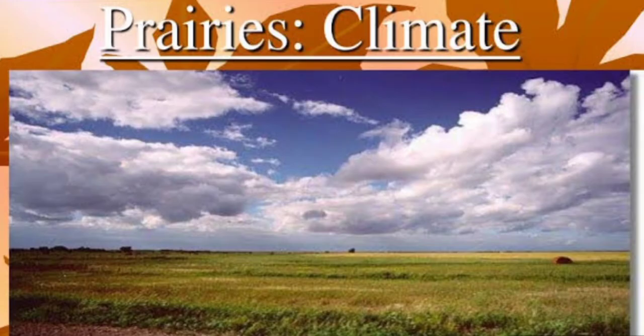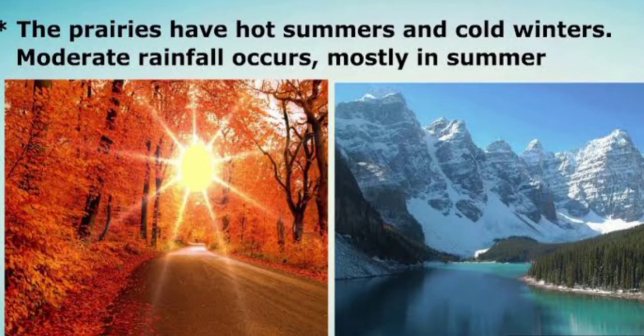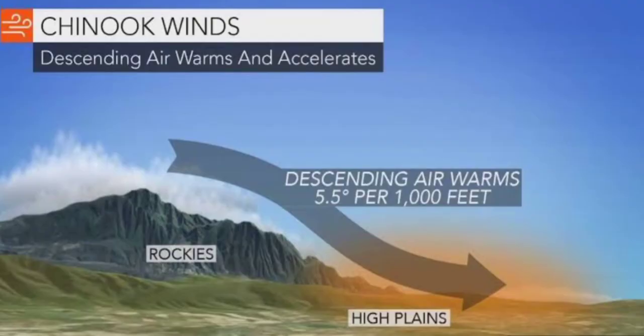Now, if we see the climate of prairies, we will notice that being located in the center of the continent, the region has an extreme type of climate. That is, the summers are hot and winters are cold, with moderate rainfall during summer. Due to the absence of a north-south barrier, a local wind called chinook blows in the prairies.